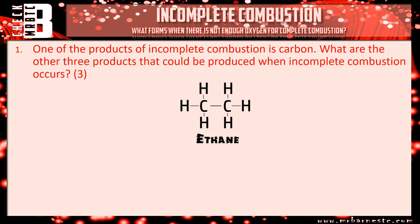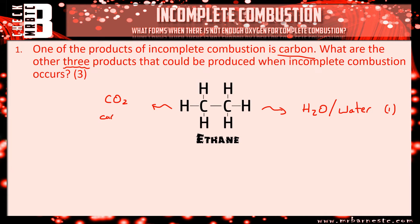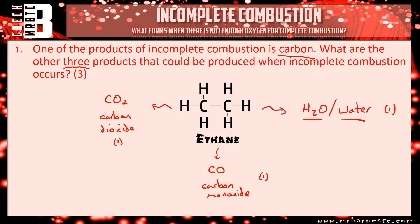Let's go through question one. It says one of the products is carbon — what are the other three? The thing that always forms first is H2O, water — that gets you your first mark. The thing produced in both complete and incomplete combustion is carbon dioxide, CO2 — that's your second mark. The one unique to incomplete combustion is CO, carbon monoxide — that's your third mark. You can put the symbol or the words, but I'd go with words because if you get a symbol wrong you'd lose the mark.